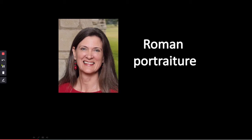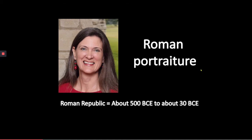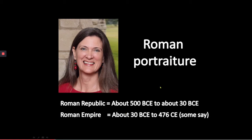Before we start looking at the Roman portrait bust, I want to lay out a little bit of Roman chronology. We can roughly divide Roman history into two main periods. The period of the Roman Republic began after the Romans got their independence from the last Etruscan king, around 500 BCE, and continued to about 30 BCE. Then the empire, which can be subdivided into several different periods, lasts from around 30 BCE up to about 476 CE, though some scholars give slightly different dates.